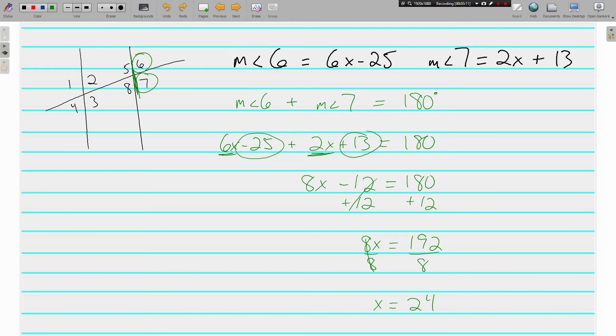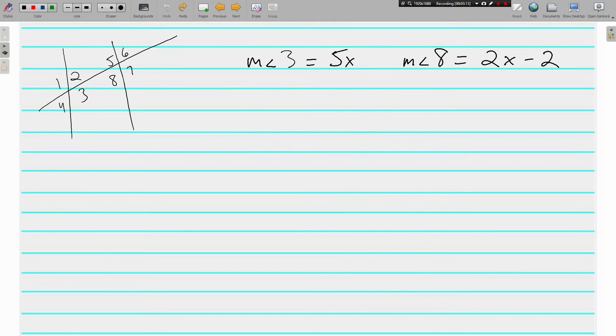It's all about knowing what the relationships are between the two angles. In this problem, we've got angle 3 and angle 8. These are consecutive interior angles, which means they are supplementary, which means they have a sum of 180 degrees. Measure of angle 3 plus the measure of angle 8 is going to equal 180 degrees.